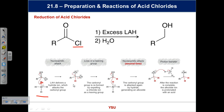Too many people get stuck at the tetrahedral intermediate and don't know the intermediate product, losing points downstream. The leaving group must come off to give the aldehyde. With excess hydride, lithium aluminium hydride reduces further. There are two mechanisms here — nucleophilic acyl substitution in the first step, then nucleophilic addition in the second, since no leaving group remains.